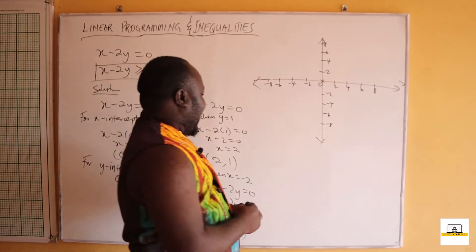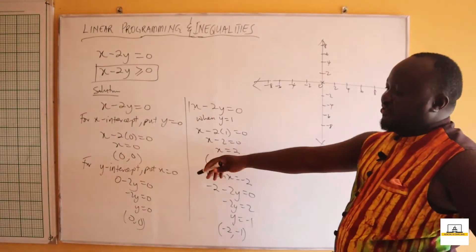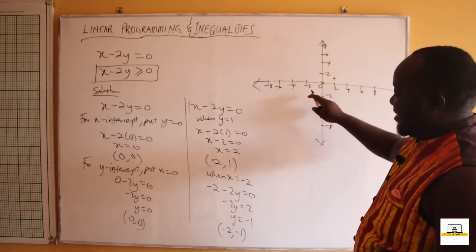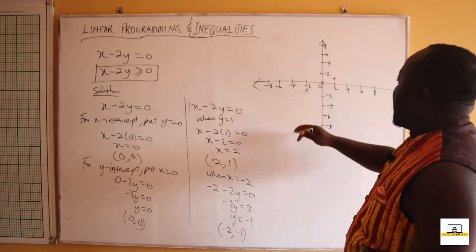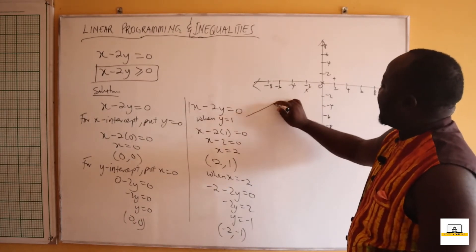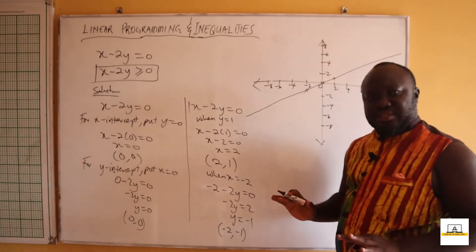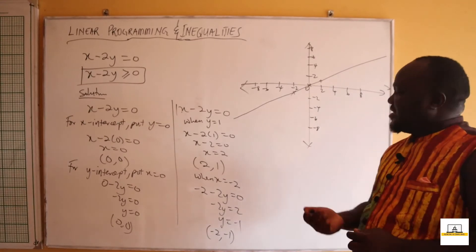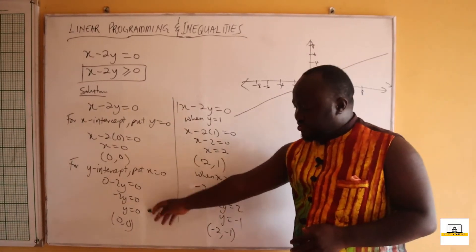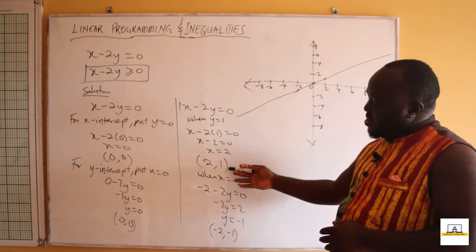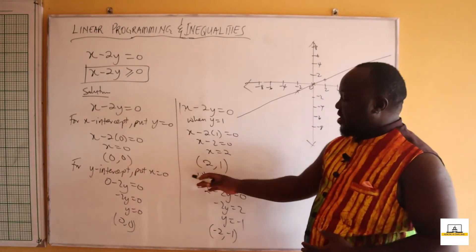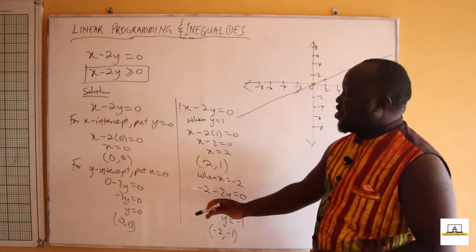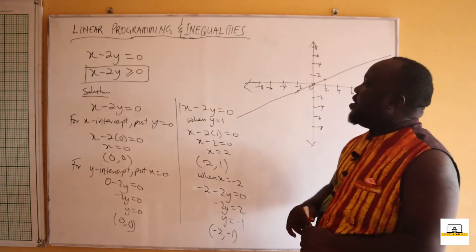On the xy-plane, we have (0, 0) as the first point. When x is 2, y is 1 — mark that point. When x is negative 2, y is negative 1 — mark that too. Draw a straight line through all three points; it will pass through all three without any margin of error. You only need (0,0) and one of the other points to draw it correctly.